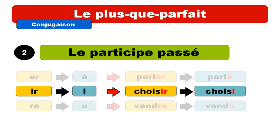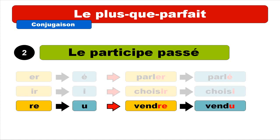The second group, IR, will become I. The example here is choisir and it becomes choisi. And then verbs ending with RE will become U — be careful because there are some exceptions. The example is vendre and it becomes vendu.